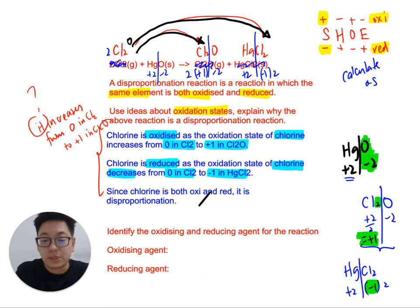Now, part two is equally interesting. You're asked to identify both the oxidizing and reducing agent for this reaction. Now, remember the oxidizing agent is a substance that oxidizes other people. The reducing agent is a substance that reduces the other substance.